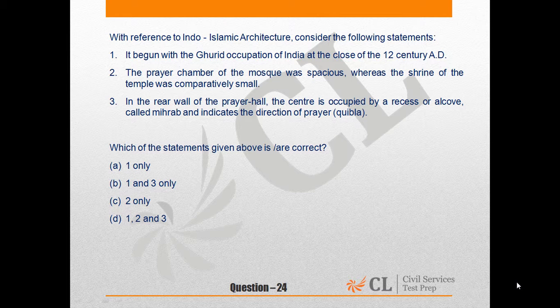Which of the above statements is/are correct? A: One only. B: One and three only. C: Two only. D: One, two and three. The correct answer is D — one, two and three. All of the above statements are correct.